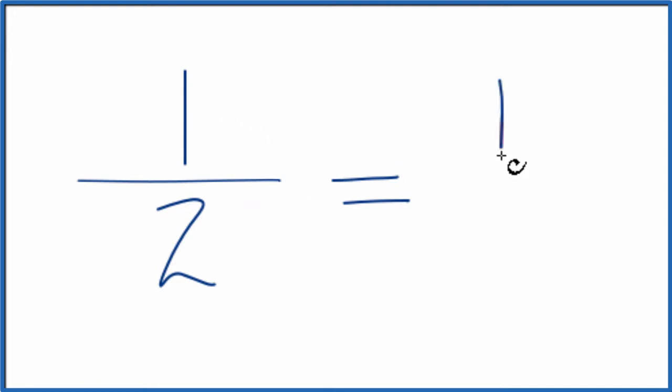so 1 divided by 1, that's 1. And the denominator, 2 divided by 1, that's 2. And we're back to where we started.